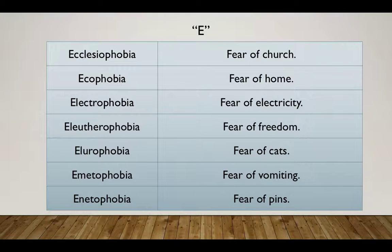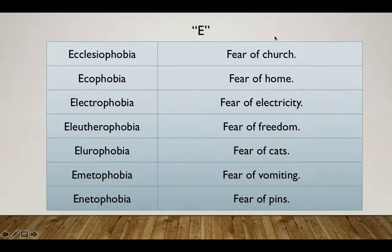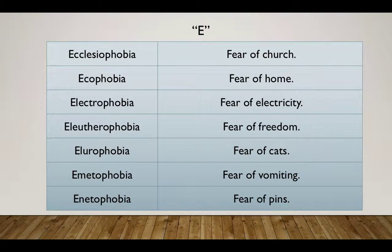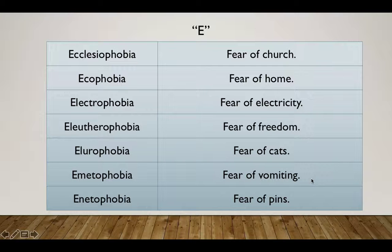Next is alphabet E. Ecclesiophobia — fear of church. Eicophobia — fear of home. Electrophobia — fear of electricity. Eleutherophobia — fear of freedom. Ailurophobia — fear of cats. Emetophobia — fear of vomiting. Aichmophobia — fear of pins. Ecclesiophobia and fear of church you will have to remember directly. Eicophobia — from ecology, where every animal and human lives in ecological balance like a home, hence Eicophobia. Electrophobia — electricity, electro relates to electricity.